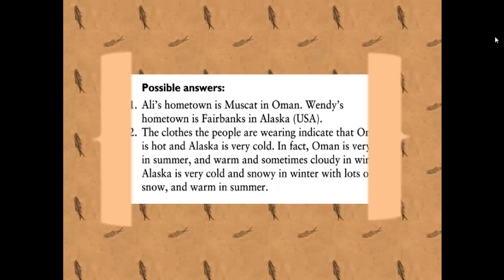The clothes which are worn by people indicate that Oman is so hot and Alaska is very cold. In fact, Oman is very hot in summer and warm and sometimes cloudy in winter. Whereas Alaska is very cold and snowy in winter—it's freezing—with lots of snow, and it's warm in summer. So here we have extreme weather.